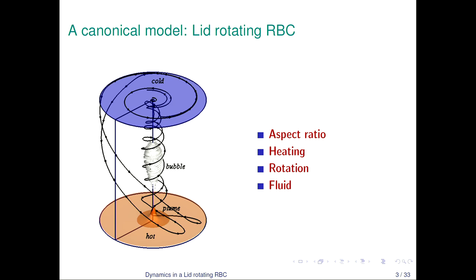Due to mass conservation, flow will happen from the centre of the cylinder towards the top lid, and thus there is a circulation of the flow. There is a spiralling of fluid from the top to the outside, it goes down and moves towards the inner region and upwards. The size of the cylinder is given by the aspect ratio, how much we are heating is given by the Rayleigh number, how much we rotate the top lid is given by the Reynolds number, and the fluid is characterized by the Prandtl number.